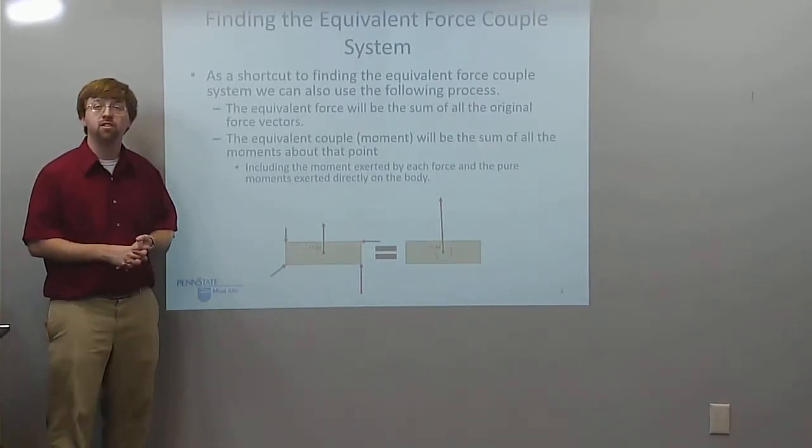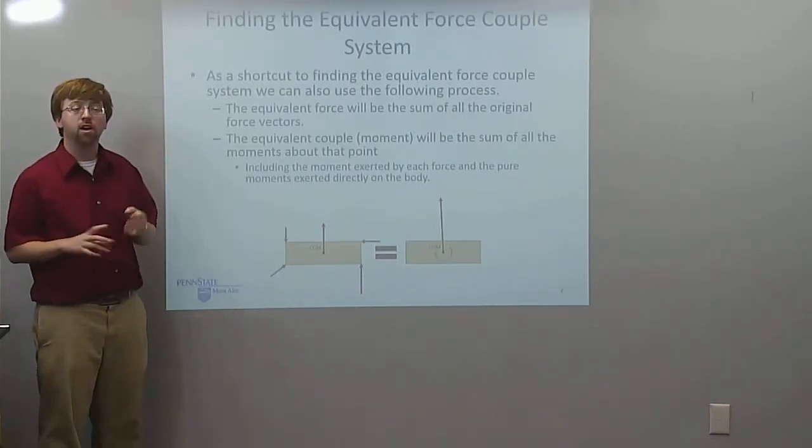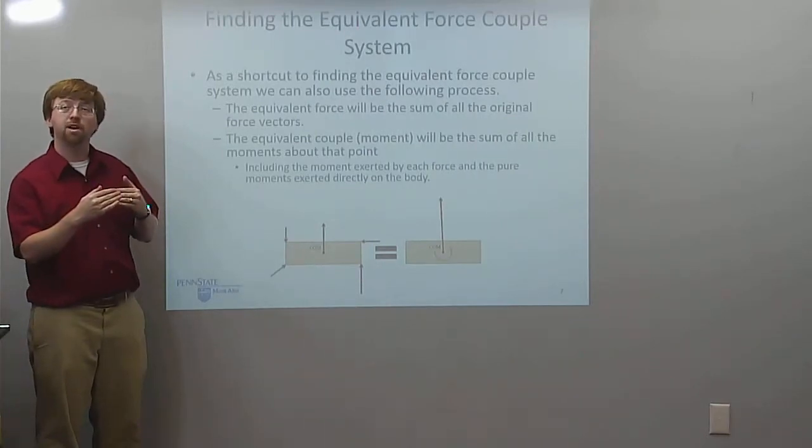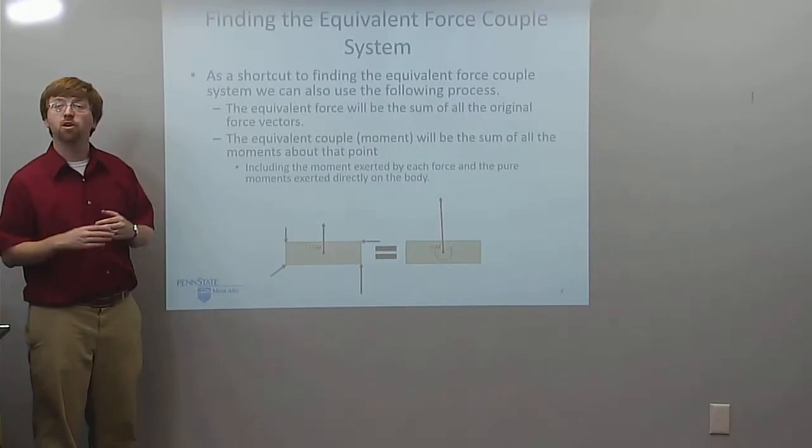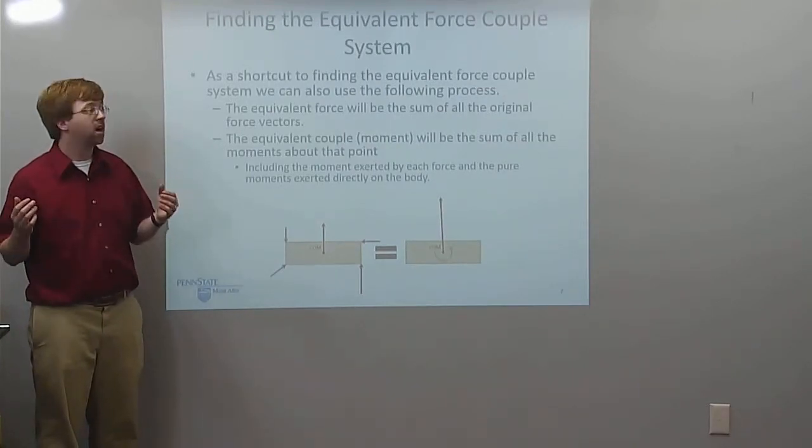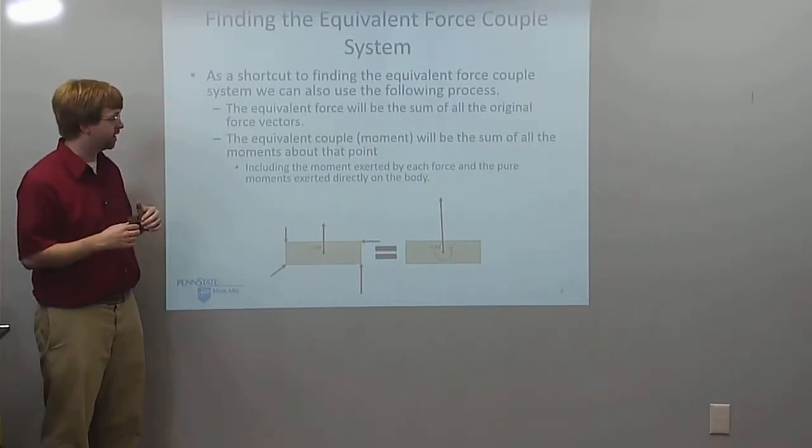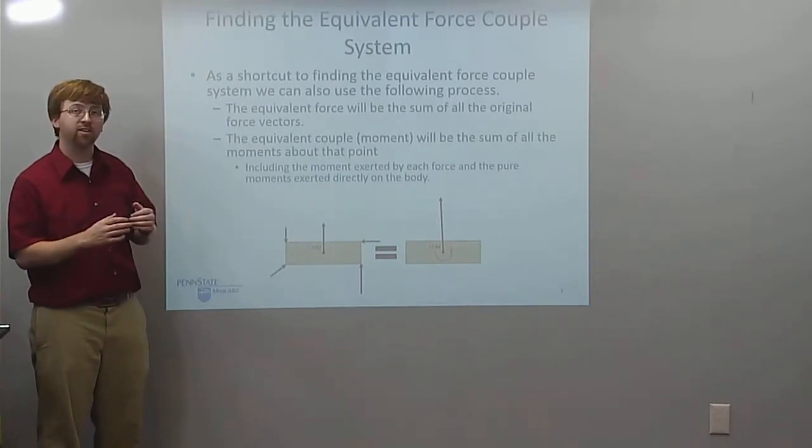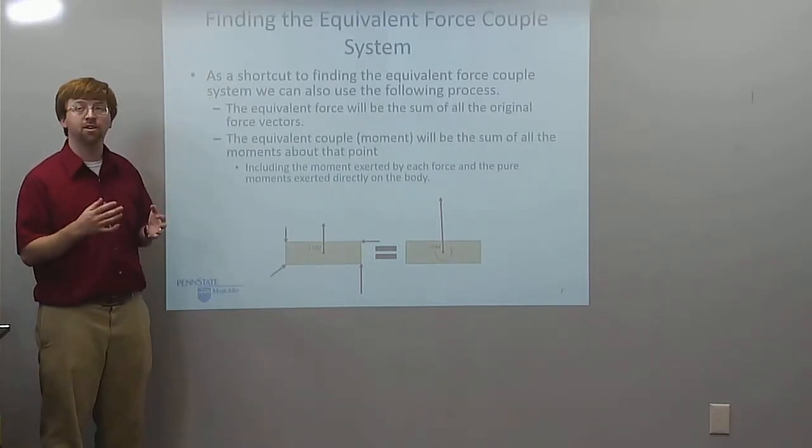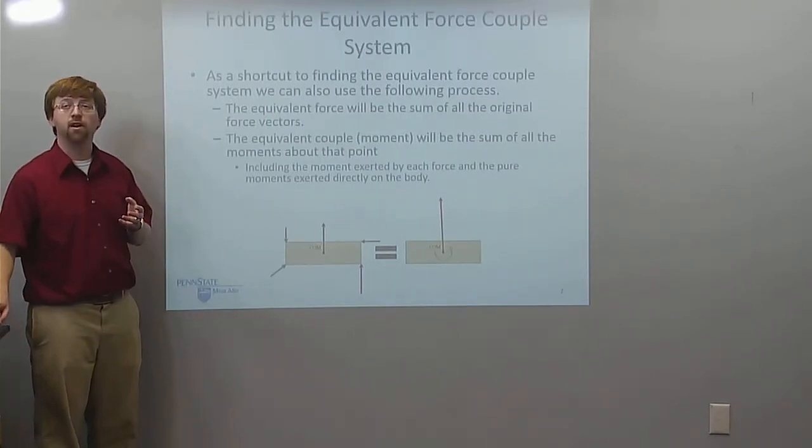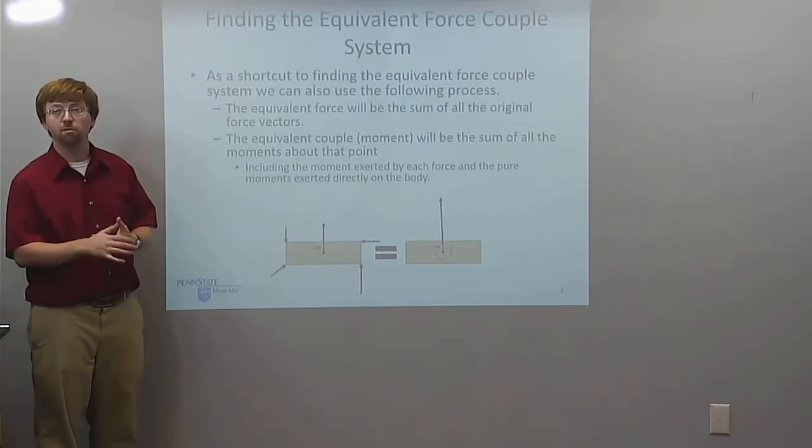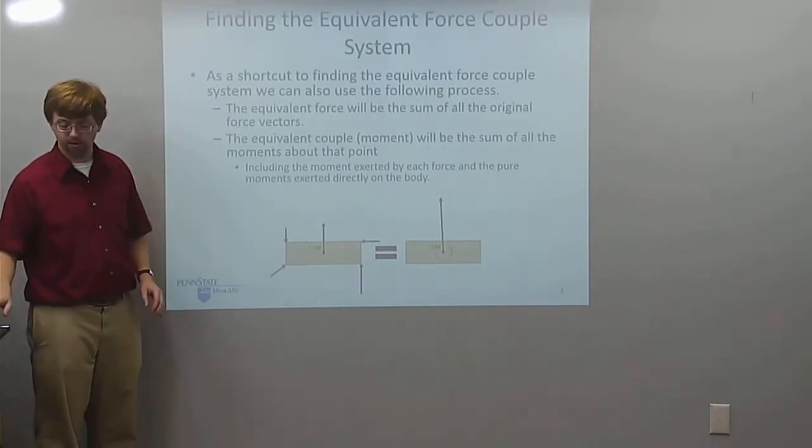With this, you've got two ways to find the equivalent force couple system. Either you use the method where you resolve all the forces into a force and a couple about some single point, or you can use the shortcut method to really add together all the force vectors and then find all the moments about one particular point. You've got these two methods to find the equivalent force couple system, which is a force and a moment that are statically equivalent to your original scenario.